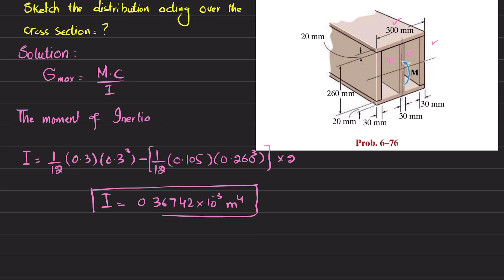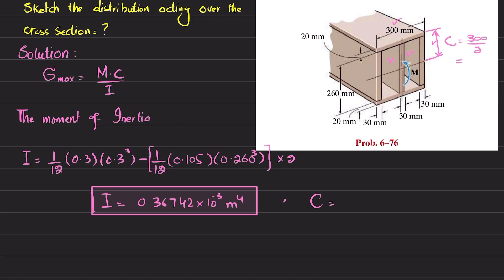Now for c — c is the maximum distance from the neutral axis to the topmost fiber. The total height is 300 mm, so c = 300/2 = 150 mm, which in meters is c = 0.150 m. The maximum bending stress given is 80 megapascal, that is 80 × 10⁶ Pa.